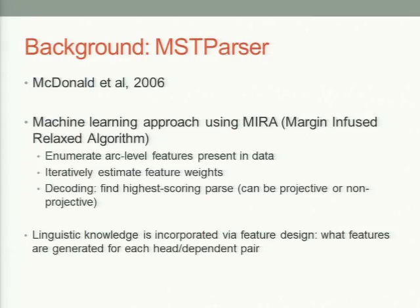MST Parser uses a machine learning approach, looking at each arc between a potential head and dependent. They enumerate features at the arc level, estimate feature weights, and to decode they define the highest-scoring parse based on those feature weights. The linguistic knowledge is incorporated mostly via feature design, so the way we were trying to add more linguistic knowledge was by tinkering with the feature templates.